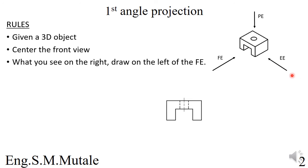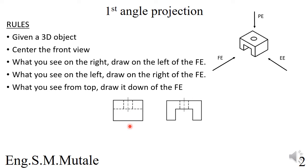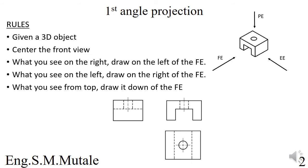Continuing the first angle projection rules: what you see on the left, you draw on the right of the front view. And what you see from the top — the plan elevation — in first angle projection you draw it below the front elevation. So if you view something from the top, you draw it beneath the front elevation.